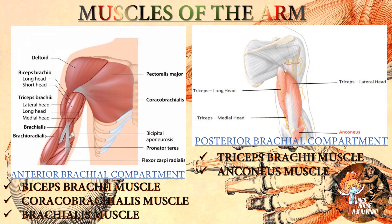Now we are going to talk about the muscles of the arm. Muscles of the arm are subdivided into the anterior brachial compartment and posterior brachial compartment. Muscles of the anterior compartment are biceps brachii, coracobrachialis, and brachialis. Muscles of the posterior brachial compartment are triceps brachii and anconeus muscle.